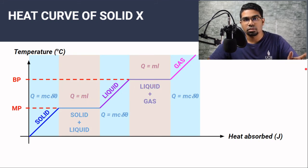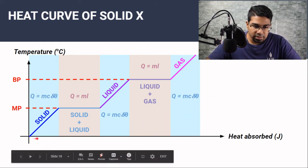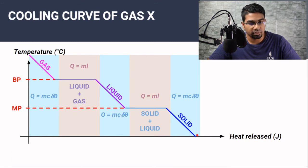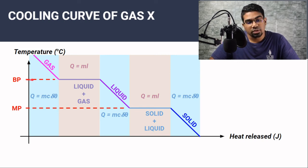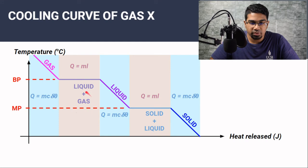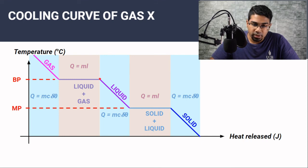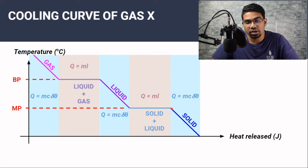The same principle can be applied to heat energy that is released. In this case, heat energy was being absorbed all the way; the same thing applies when heat is released. When heat is released, we have a cooling curve. Let's look at the cooling curve of gas X. We start with gas; as heat energy is released, the temperature will start to drop until it comes to the boiling point, where the gas will start to change into liquid. There will be a mixture of liquid and gas until all gas has turned to liquid, then the liquid temperature will start to drop again until it starts changing into solid. When it begins to change to solid, there will be a period of time where solid and liquid exist together.